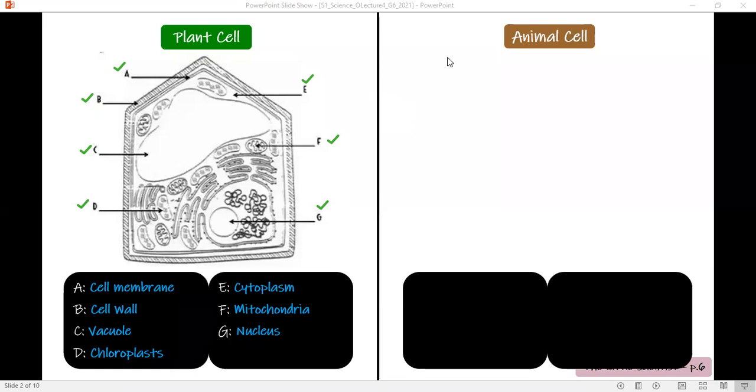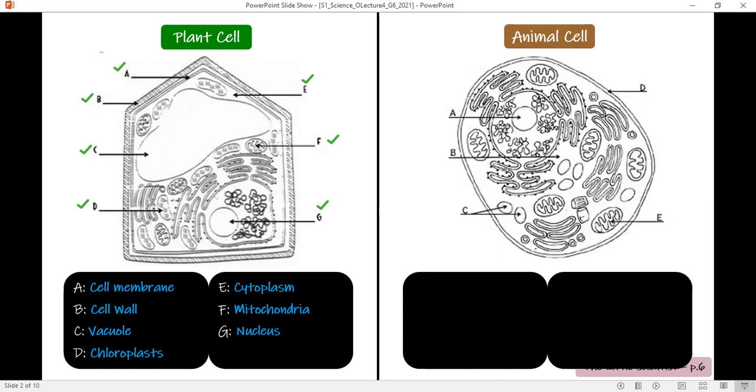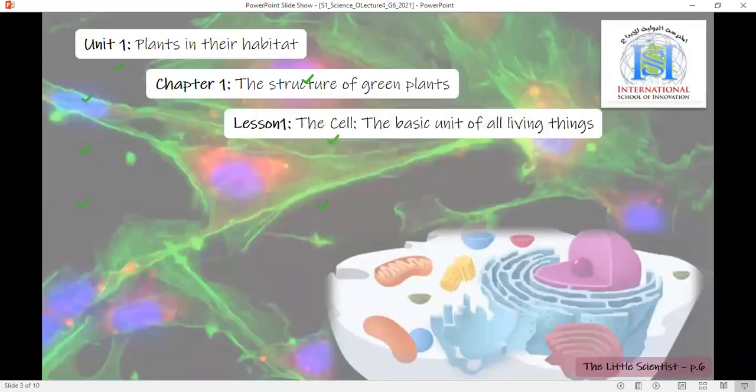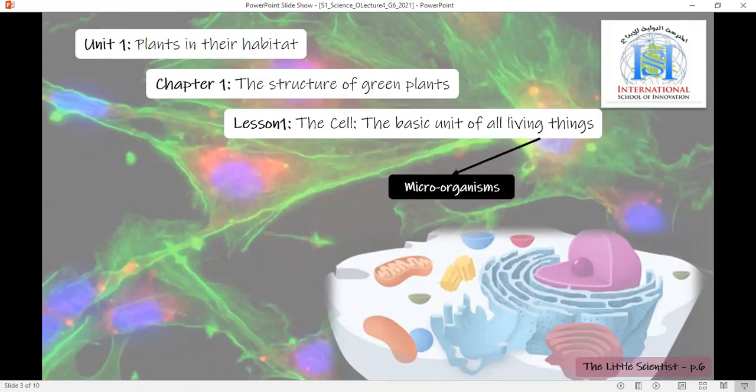Animal cells show almost the same organelles or parts except for the cell wall and the chloroplasts. So you will see a nucleus, cytoplasm, vacuoles, cell membrane, and mitochondria. These cells, plant cells and animal cells, can build different types of living things. You can find microorganisms—organisms that are too small and made out of a small number of cells. These organisms are microorganisms, which means they cannot be seen by naked eyes but by a microscope.